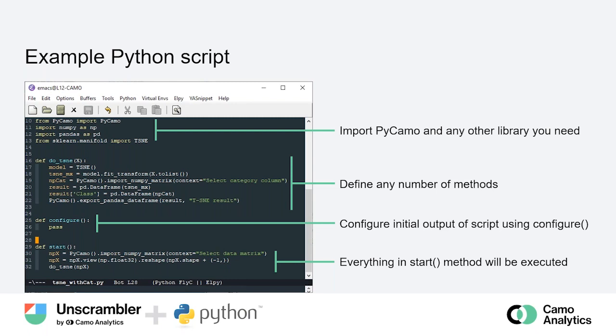Next you can define any number of methods that you prefer. In this example, the particular method calls t-SNE from a publicly available library called scikit-learn and applies t-SNE clustering on data fetched from Unscrambler. There are two main methods in our pycamo library: configure, where you set the initial output of scripts, and the most important one called start — everything written in the start method is executed once you click a button in Unscrambler 11.